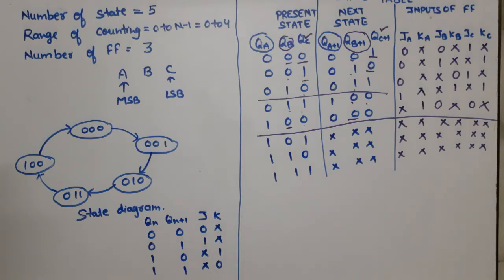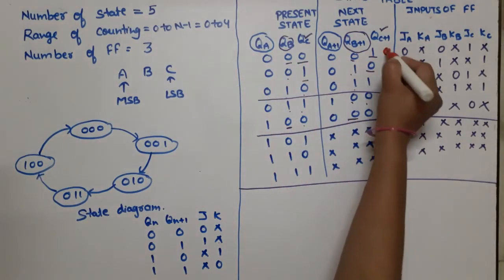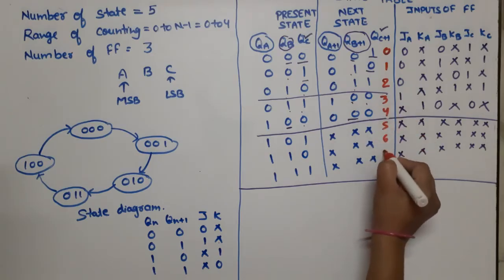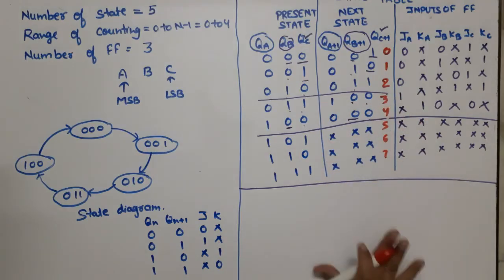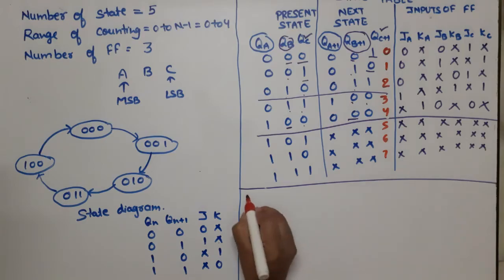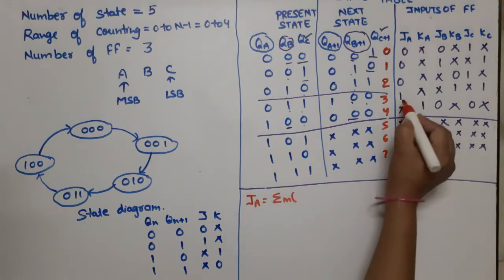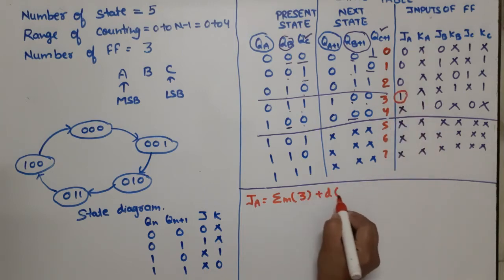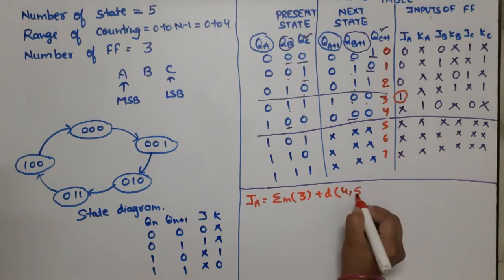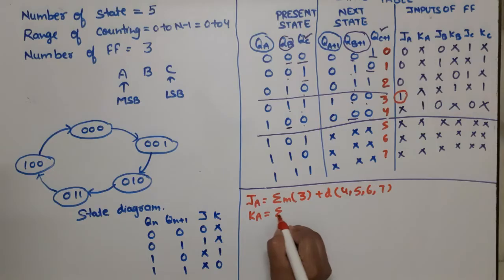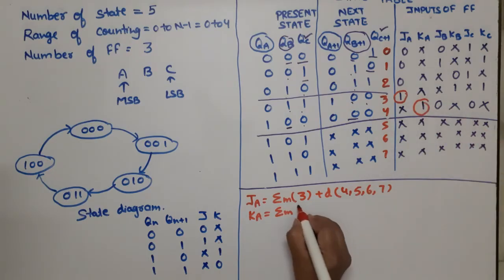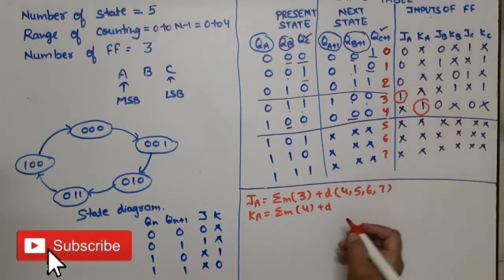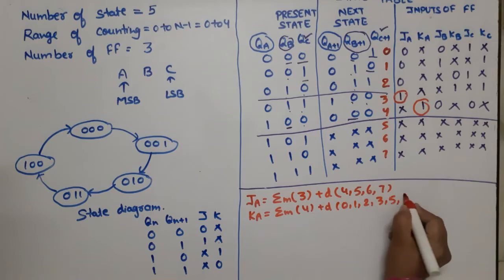Now let's write the Boolean expressions. For JA, the minterm is at position 3, with don't cares at 0, 1, 2, 5, 6, 7. For KA, the minterm is at position 4, with don't cares at 0, 1, 2, 3, 5, 6, 7. For JB, the minterm is at position 1, with don't cares at 2, 3, 5, 6, 7. For KB, the minterm is at position 3, with don't cares at 0, 1, 4, 5, 6, 7.